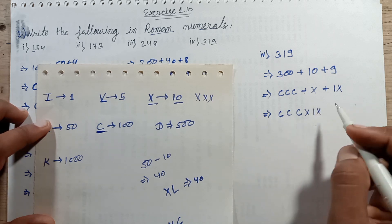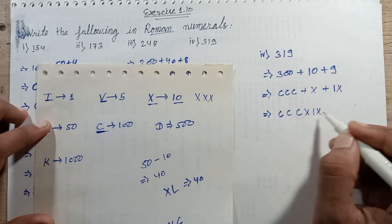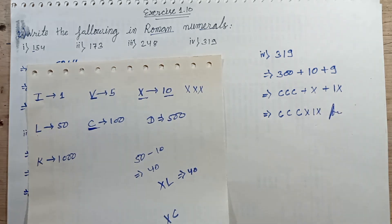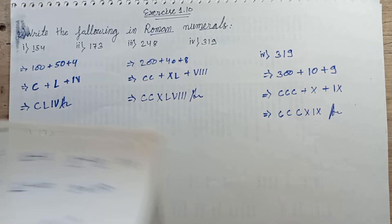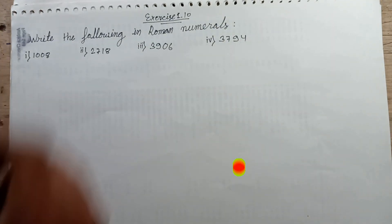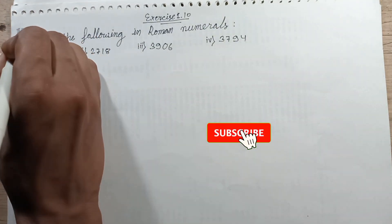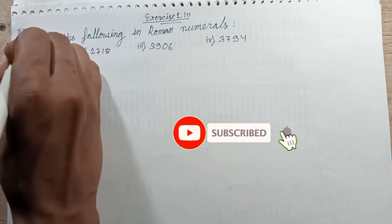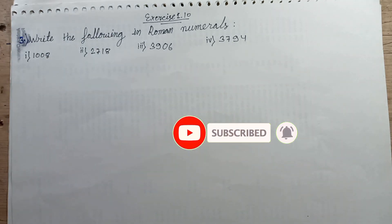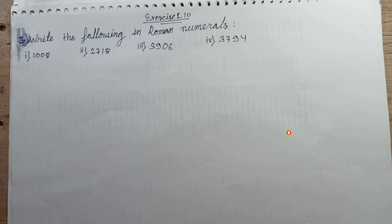This Roman numeral represents 319. Question number 3 will be solved in the next episode. Subscribe and manage your notifications for upcoming videos. See you soon!